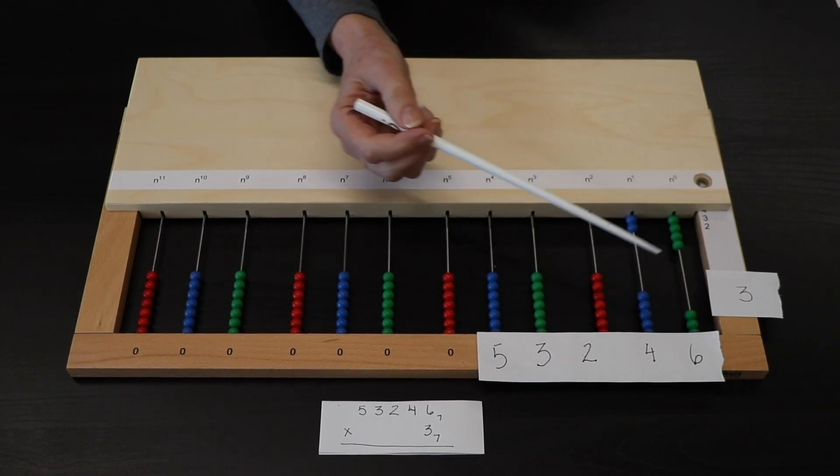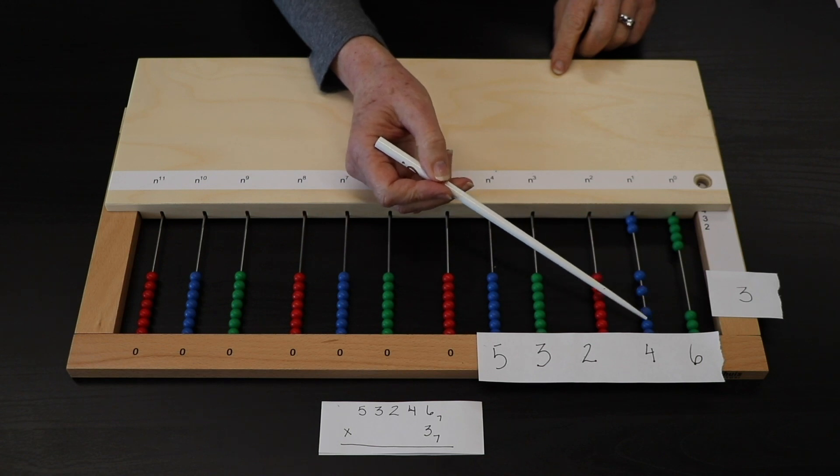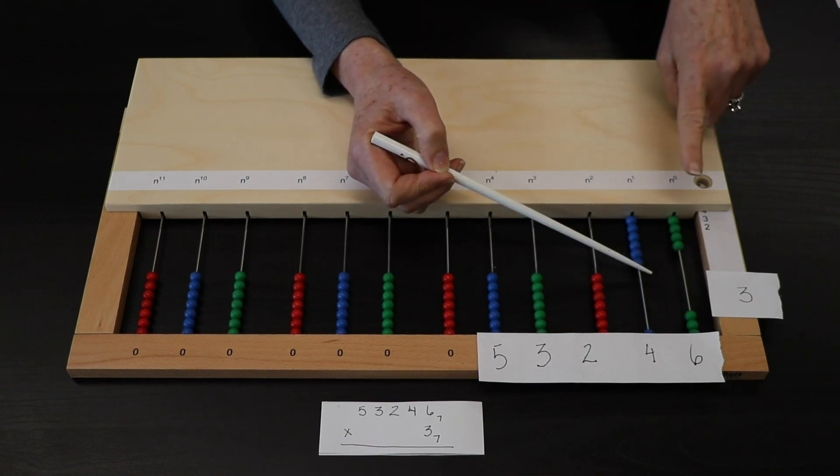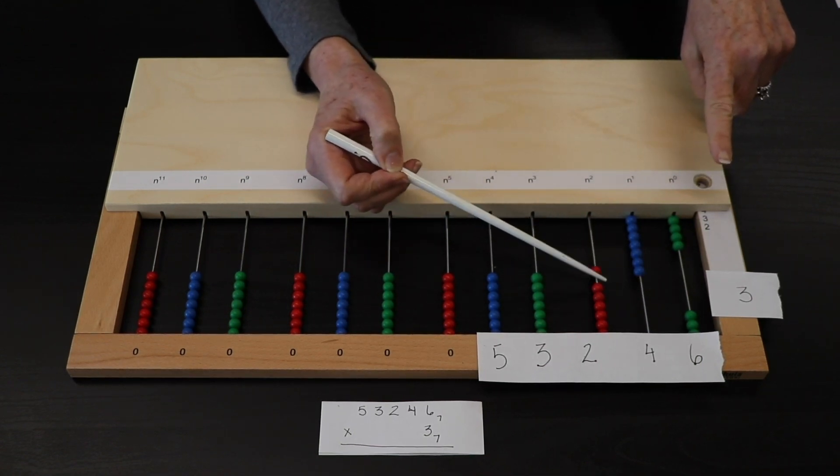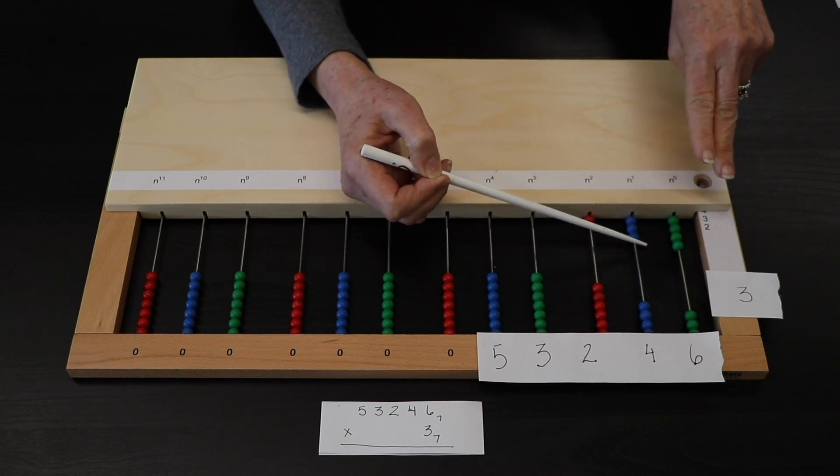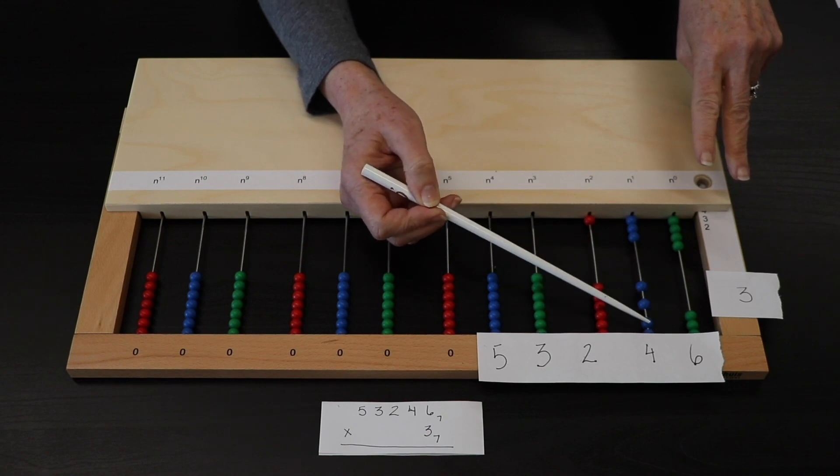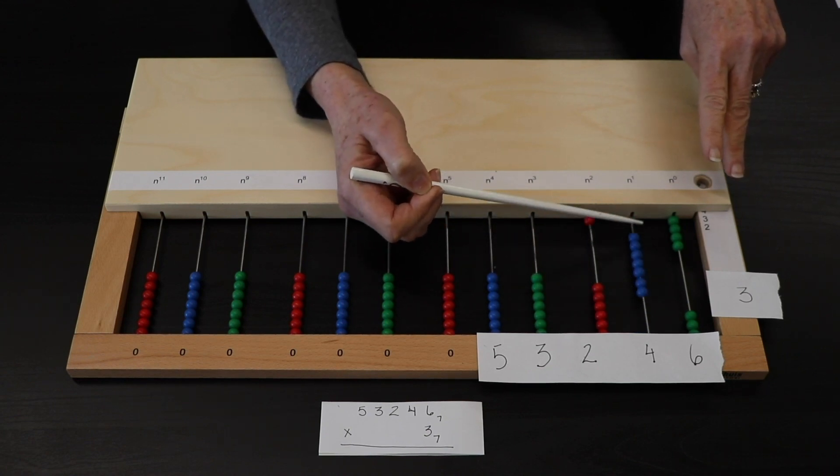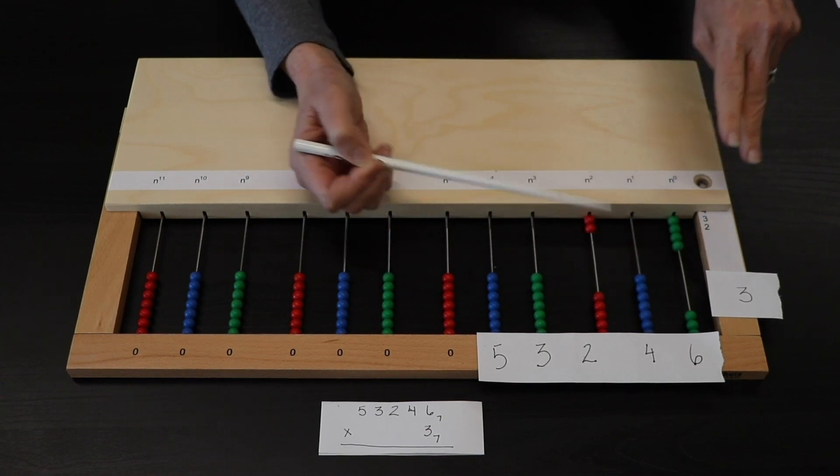So let's continue building our sets. A set of 4, taken 3 times. 1, 2, 3, 4, taken once. 1, 2, 3, 4, taken twice. 1, 2, 3, 4, taken 3 times.